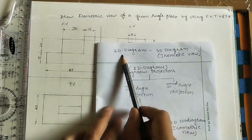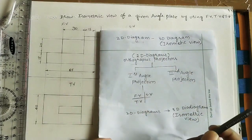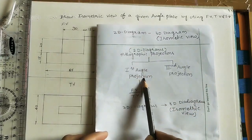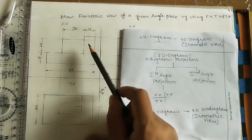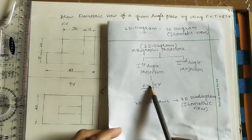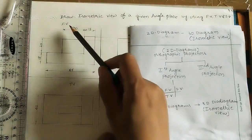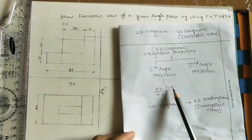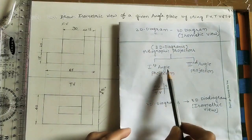The given diagram is a 2D diagram, and we can call it as orthographic projections also. For doing orthographic projections we have two methods: first angle projection method and third angle projection method. In the given diagram, it is a first angle projection. In the first angle projection, the front view comes initially. Below the front view, the top view is coming, and the side view is coming after the front view. So according to the given diagram, this is the first angle projection.